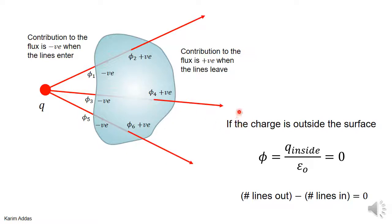So that means if the charge is outside the surface, from Gauss's law, the total electric flux will be charge inside over epsilon-naught — you get zero. And this is the reason why you get zero: because the number of lines going out minus the number of lines going in is zero. The contribution when the line goes in cancels exactly with the contribution when the line goes out.